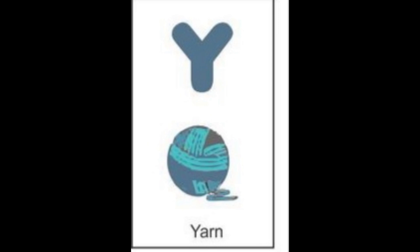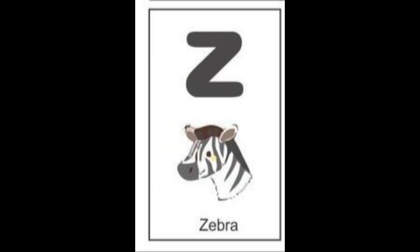The next letter is Y. Y for yarn. The color of yarn is dark blue. And the last letter is Z. Z for zebra and the color of zebra is black.